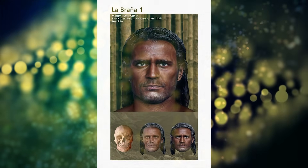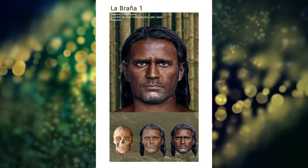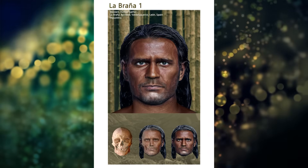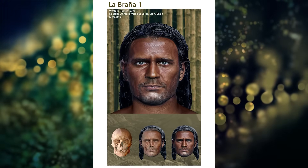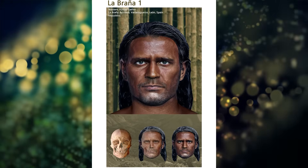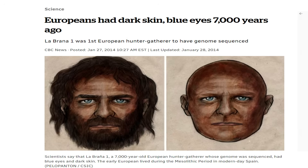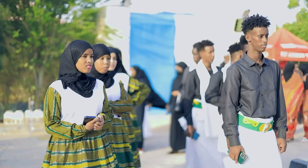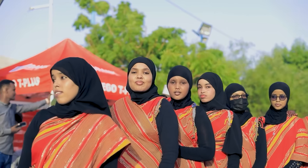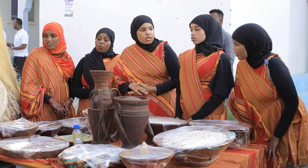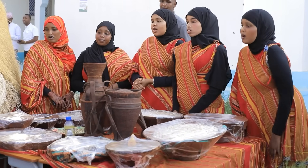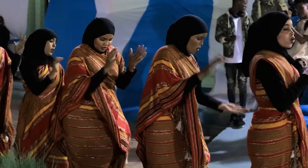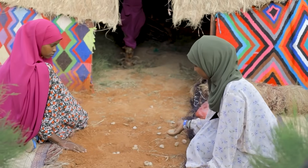Another good piece of evidence is the appearance of early European hunter-gatherers, most notably the Loschbour specimen, who also had Caucasian features with dark skin. The appearance of these early Europeans is very similar to that of Horn of Africans, and supports the idea that the phenotype of Cushites is the original phenotype of mankind, alongside the phenotype typical of the Khoisan peoples, from which it diversified into the range of colors and looks of humanity.